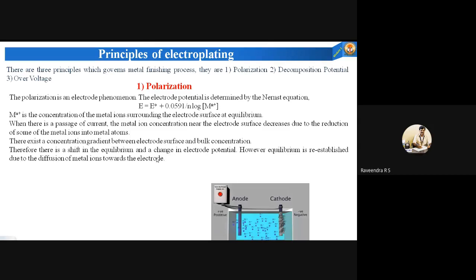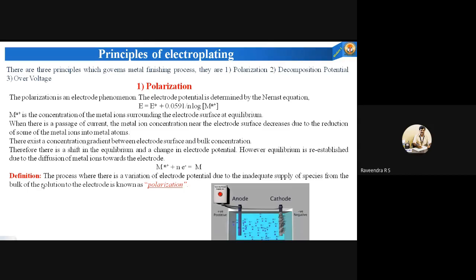This shifts the equilibrium and causes a change in the electrode potential — the equilibrium shifts towards the right or sometimes the left side. However, the equilibrium is reestablished due to the diffusion of metal ions towards the electrode — this is not permanent. Hence, we can define polarization as the process where there is a variation of electrode potential due to the inadequate supply of species from the bulk of the solution to the electrode.